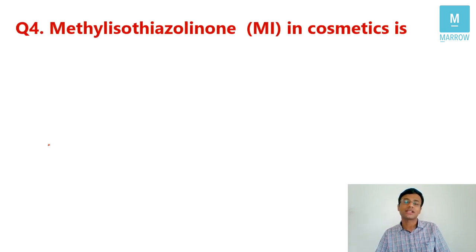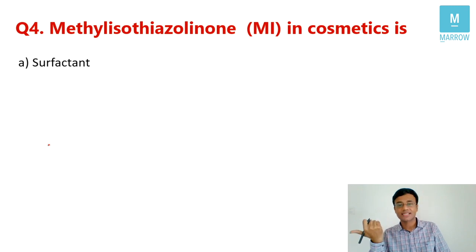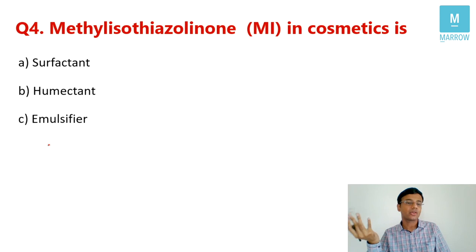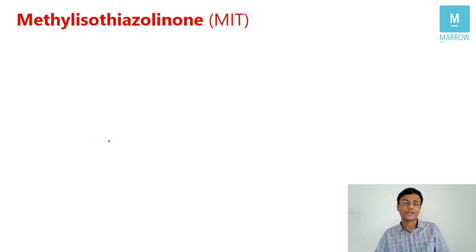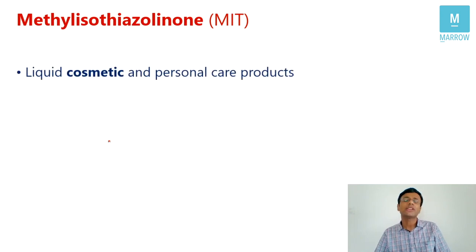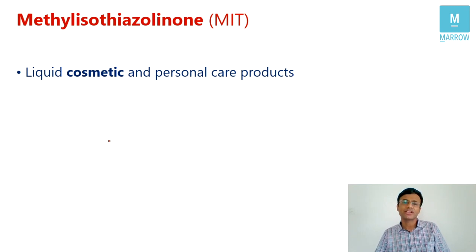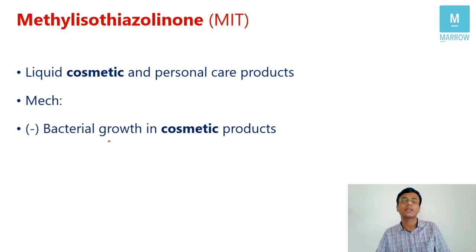Question number four — a first-timer in AIIMS: Methyl isothiazolinone (MI) as abbreviated in cosmetics is: a surfactant, humectant, emulsifier, or preservative? The correct answer is it is a preservative — a very important component of cosmetics found in shampoos, conditioners, sunscreens, and baby lotions. It is included because it inhibits bacterial growth in cosmetic products.